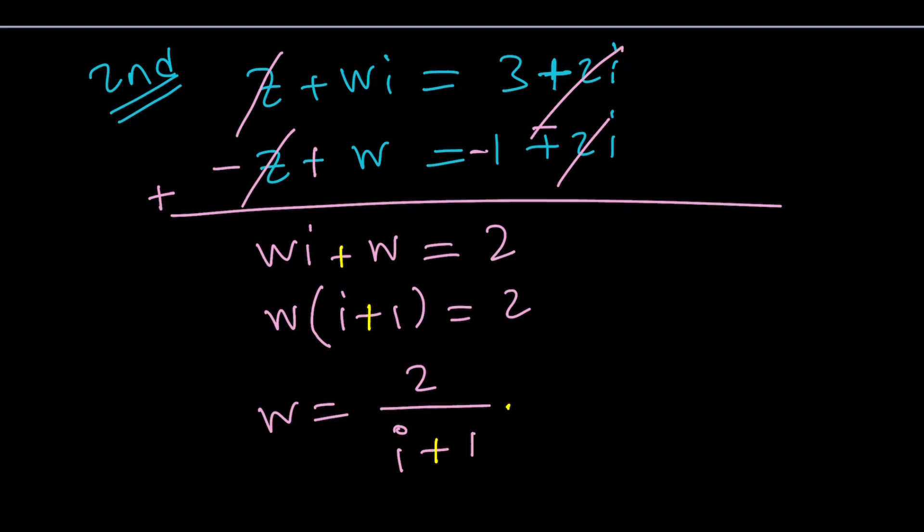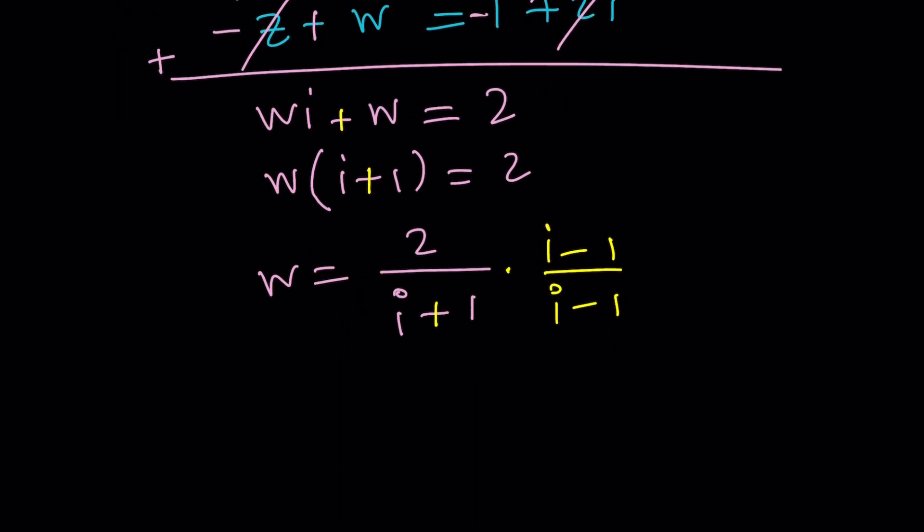So we're going to multiply by i minus 1 and i minus 1. That's going to give me W equals negative 2 plus 2i. I want to write in standard form now because we're going to simplify next.